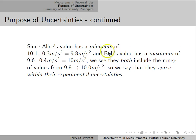The uncertainty means that Alice's value has a minimum of 10.1 minus 0.3, which is 9.8 meters per second squared, and Bob's value has a maximum of 9.6 plus 0.4, which is 10 meters per second squared. That means both Alice's and Bob's value include the range of values from 9.8 to 10 meters per second squared, so they agree within their experimental uncertainties.